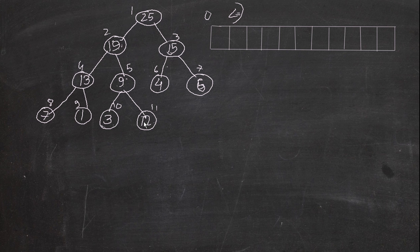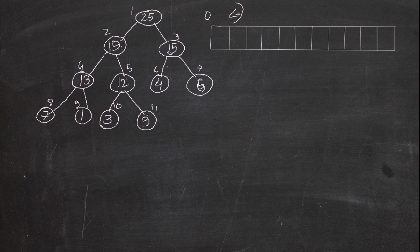We also need to swap 12 and 9 since 12 should be above 9. After swapping, 12 is here and 9 is here. This is now in max-heapify format — it's sorted. We can place this in the array, but we are doing the heap sort algorithm.